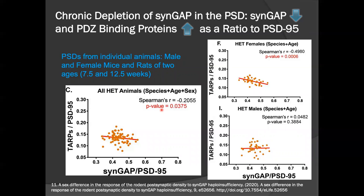Looking at this data further, you can ask where this correlation is coming from in the heterozygotes — is it that all animal types are contributing equally? The answer is no. It turns out the correlation is being driven by the heterozygote females. This group contains female mice and rats of 7½ and 12 weeks old, so it doesn't matter the species or the age of the animal — they're all contributing to this anticorrelation. But you do not see that in heterozygote males. So we're seeing a sex difference in the response of the composition of the post-synaptic density to the removal of SYNGAP from the system.